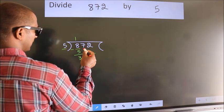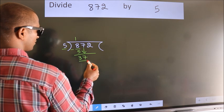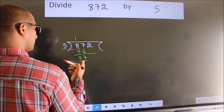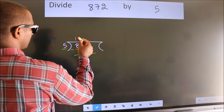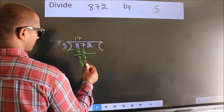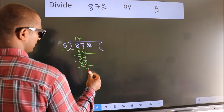After this, bring down the beside number. So, 7 down, giving us 37. A number close to 37 in the 5 table is 5 sevens, which is 35. Now we subtract. We get 2.